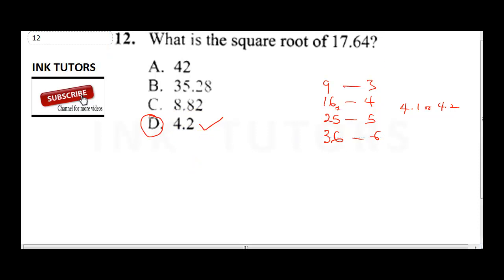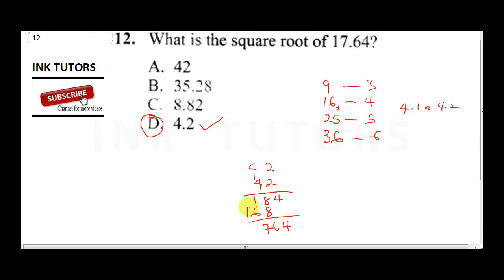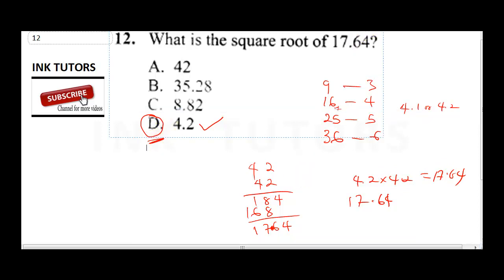To verify, let's multiply 4.2 times 4.2: 2 times 2 is 4, 2 times 4 is 8, 4 times 2 is 8, 4 times 4 is 16. Adding: 4, 8 plus 8 is 16 carry 1, giving 17. Placing the decimal back gives us 17.64. This confirms our answer: the square root of 17.64 is 4.2.